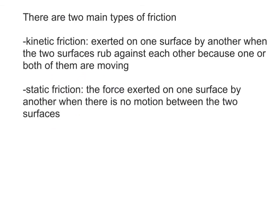The two main types of friction are kinetic friction and static friction. Kinetic by nature just means moving, and kinetic friction is the type of friction exerted on one surface by another when the two surfaces rub against each other because one or both of them are moving. In other words, kinetic friction is what occurs when they're sliding.